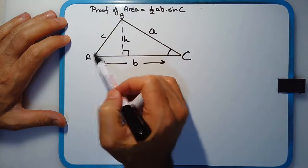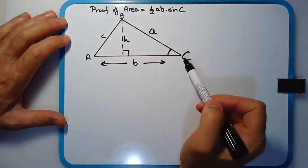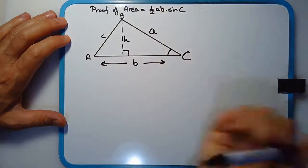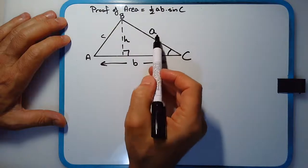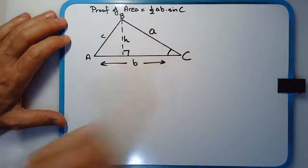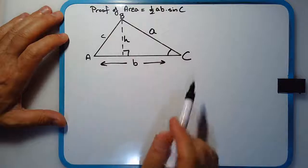We've got angle A, angle B, angle C. So they're the vertices of the triangle. And we've got side lowercase a, side lowercase b, side lowercase c there being the opposite sides of the triangle.